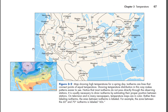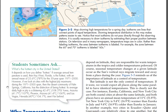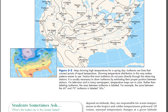Students sometimes ask: What's the hottest city in the United States? It depends on how you define 'hottest.' If average annual temperature is used, then Key West, Florida, is the hottest, with an annual mean of 25.6°C (78°F) for the 30-year span 1971–2000. However, if we look at cities with the highest July maximums during the 1971–2000 span, then the desert community of Palm Springs, California, has the distinction of being hottest — its average daily high in July is 42.4°C. Yuma, Arizona (41.7°C), Phoenix, Arizona (41.4°C), and Las Vegas, Nevada (40°C), aren't far behind.